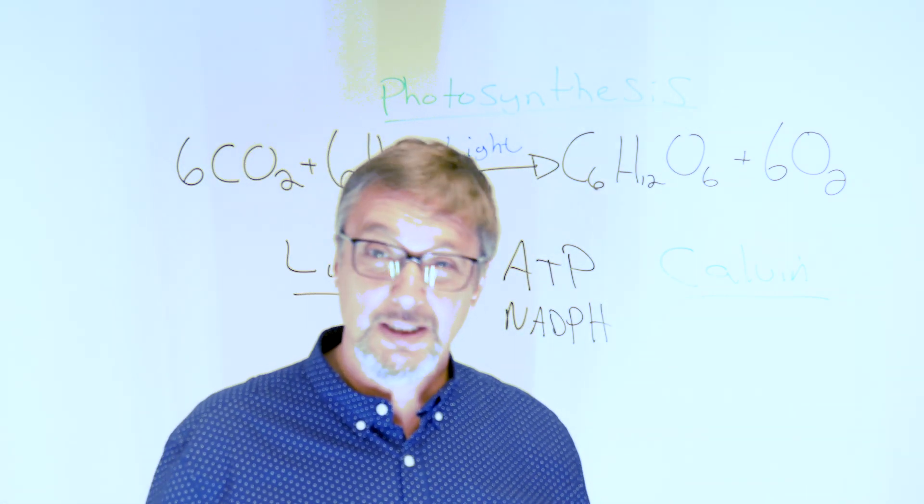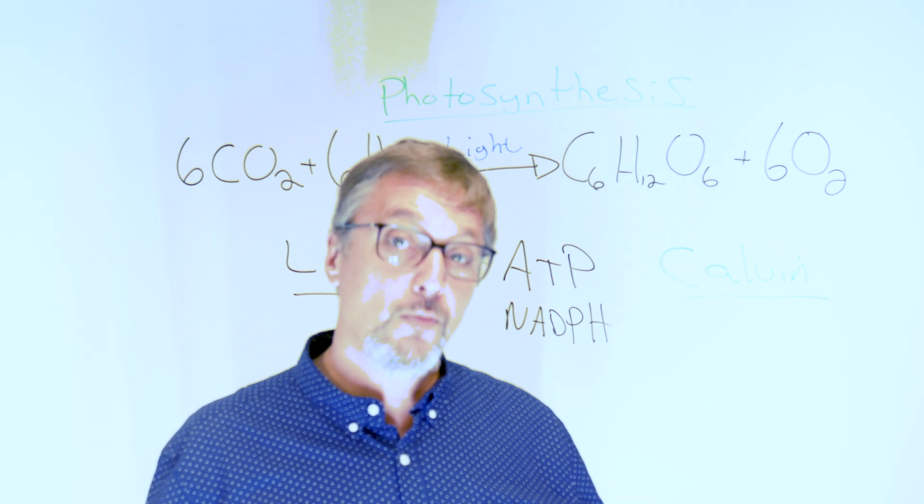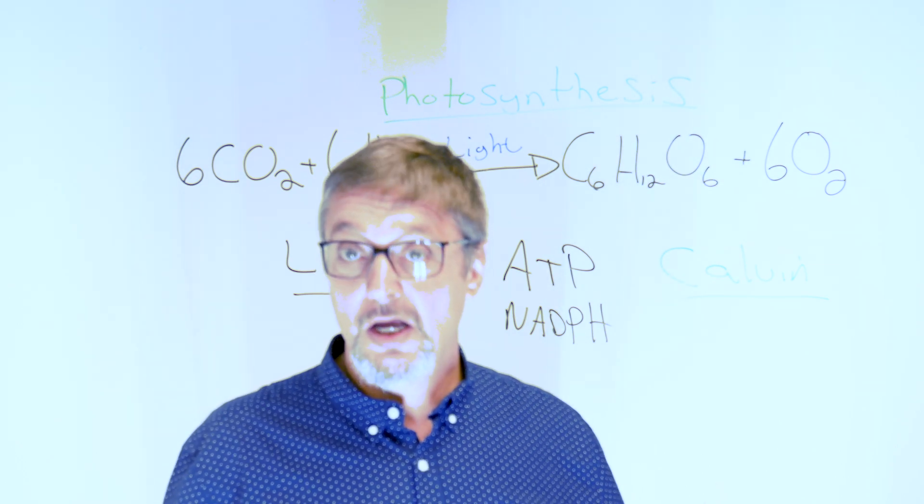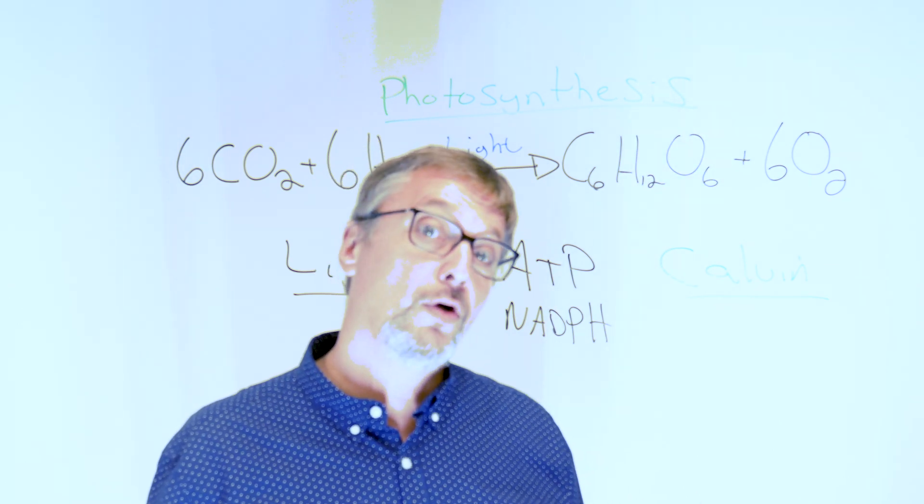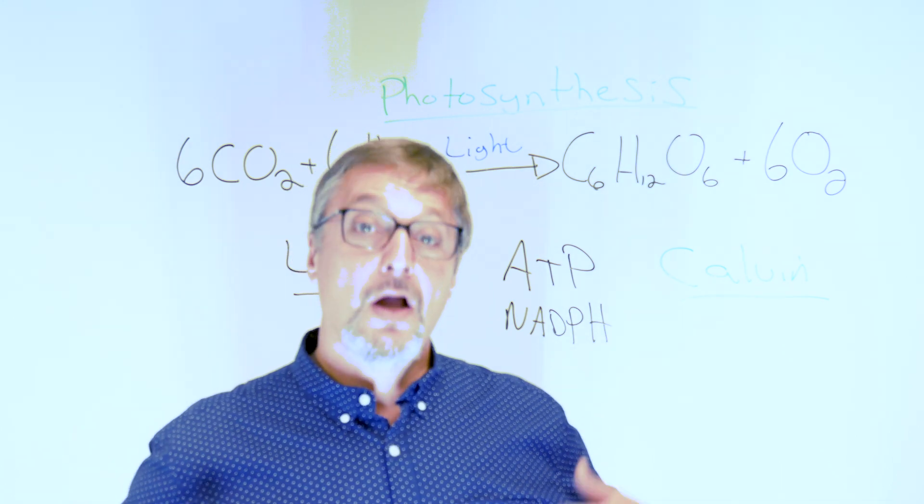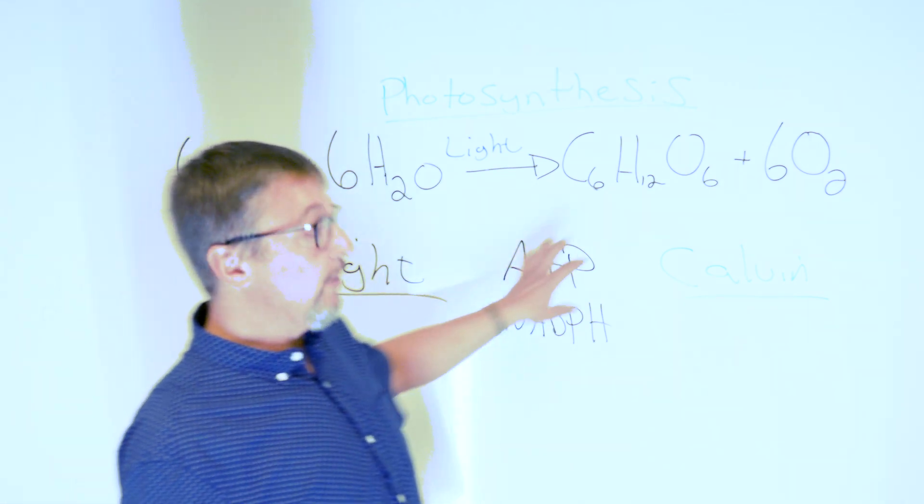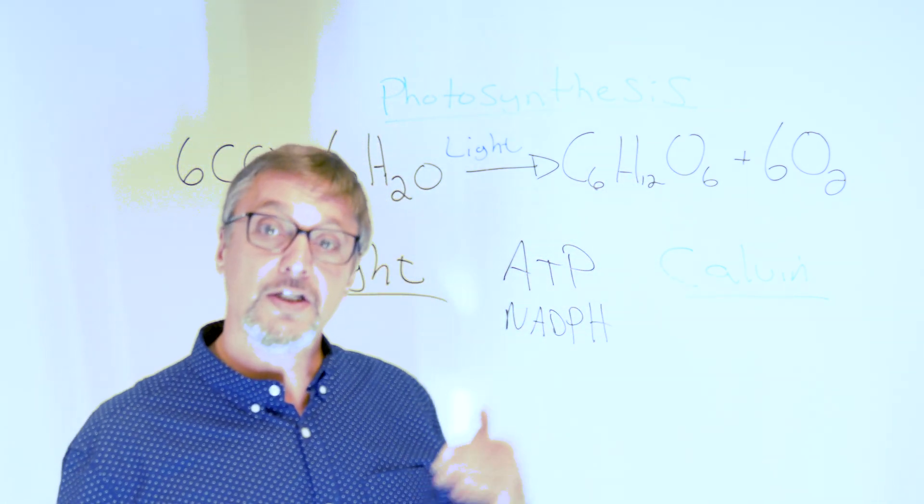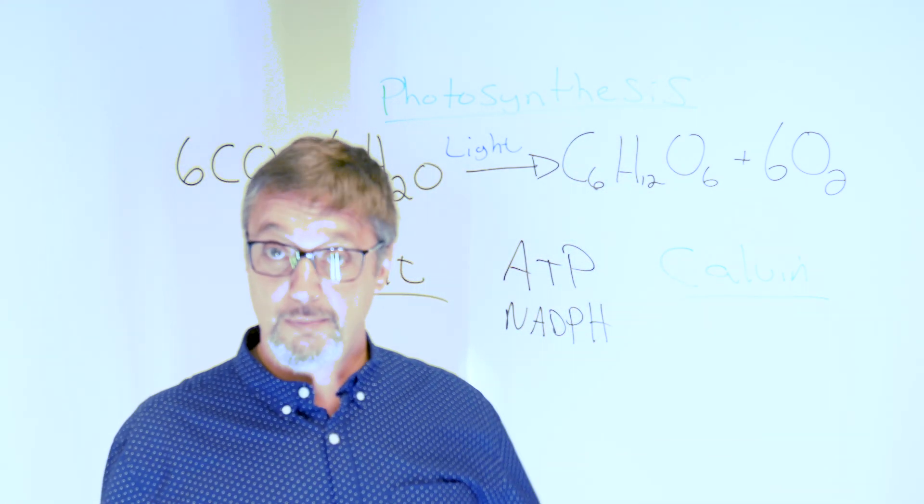You need to be using a high wattage full spectrum LED, a high pressure sodium bulb, or a ceramic metal halide bulb. With these types of lights, you're going to have high light intensity, which means when you add CO2, you're really going to see some improvements in your plant growth.